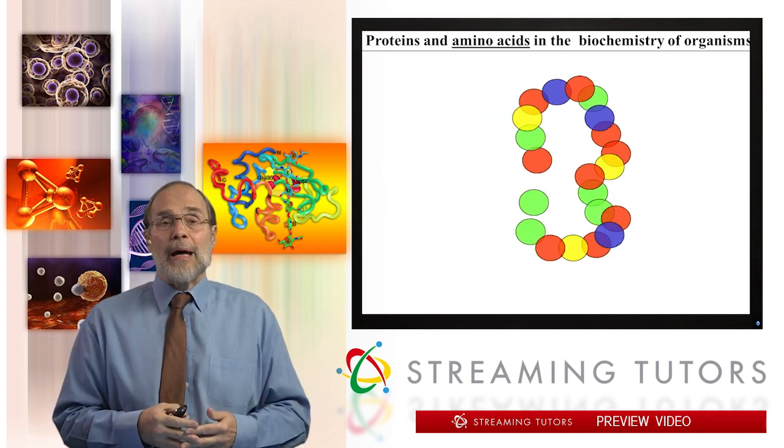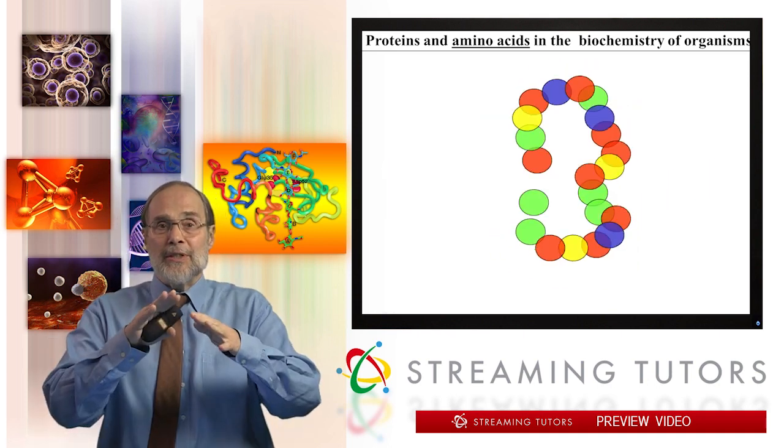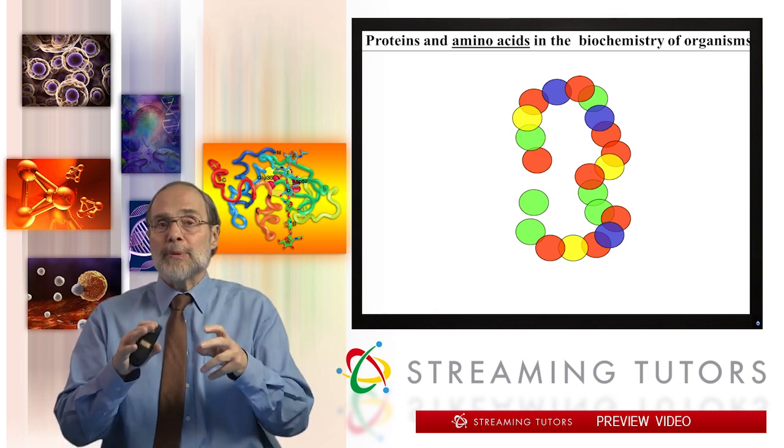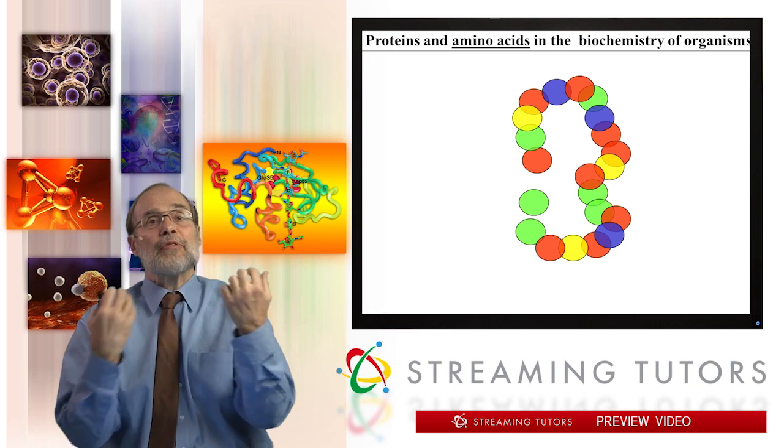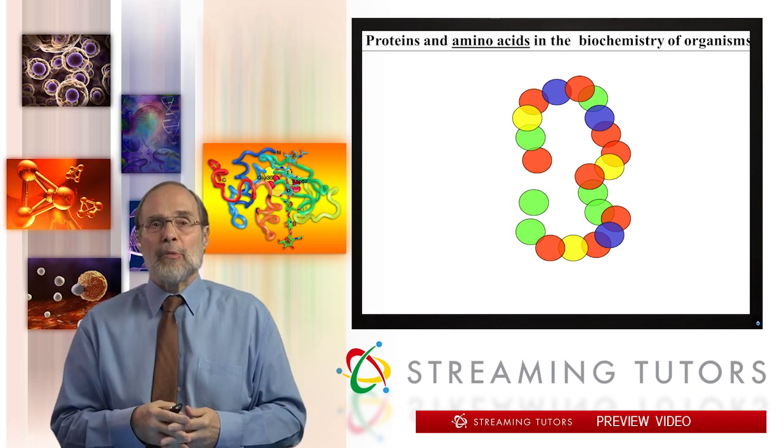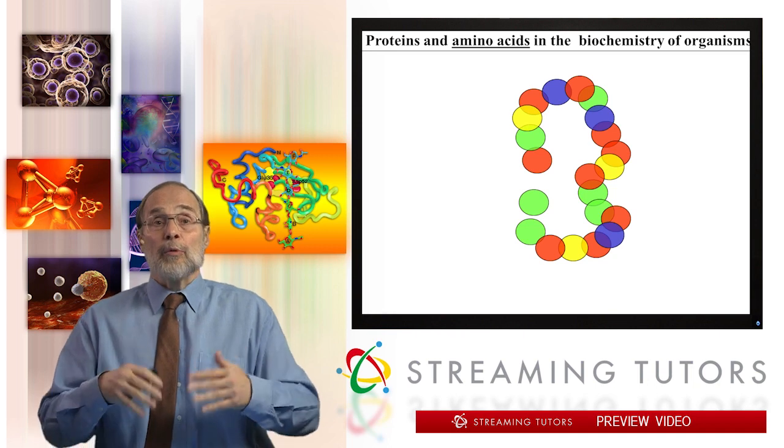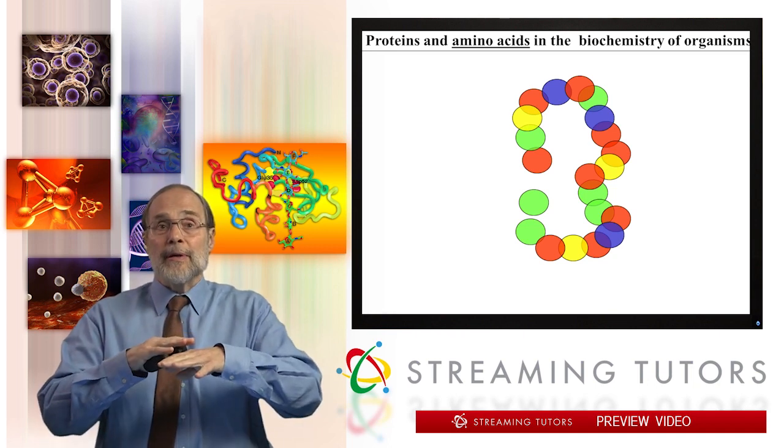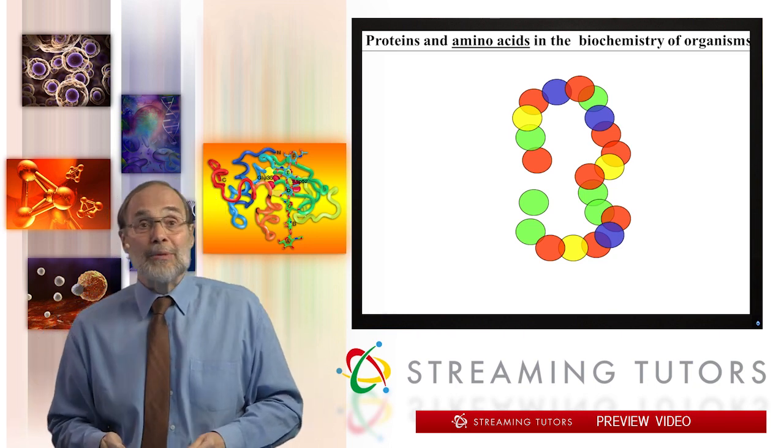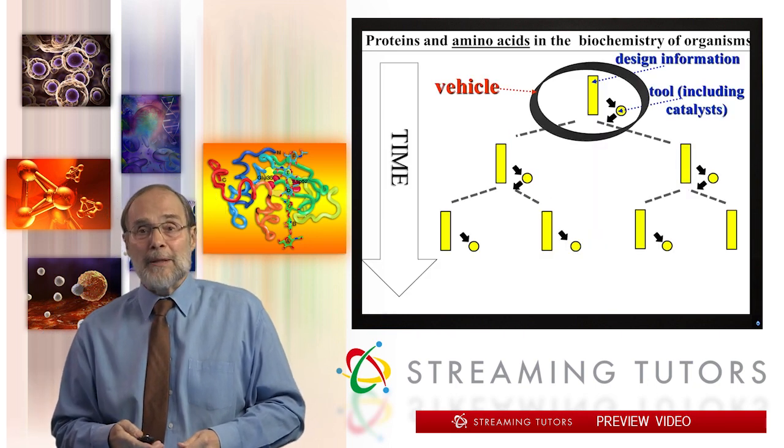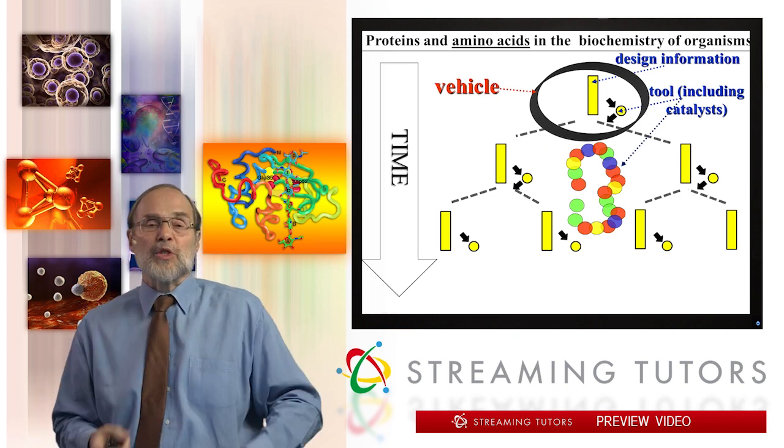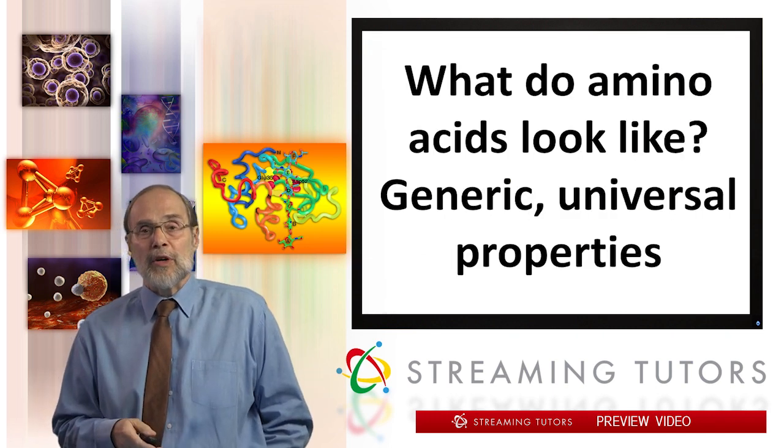Remember why we care about amino acid structure. Because the different amino acids, because of their different structures, put proteins in a position to fold up in a sequence specific way. So the physical and chemical properties of amino acids as monomers are reflected in the properties of their polymers that are all the molecular machines that biochemistry is mostly about. These molecular machines are the functional entities that are central to the functioning of organisms.